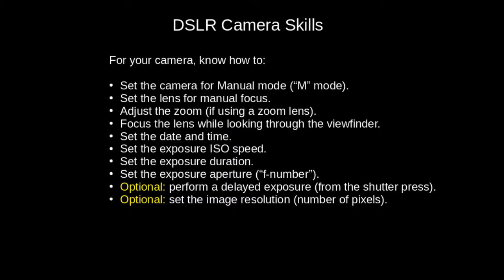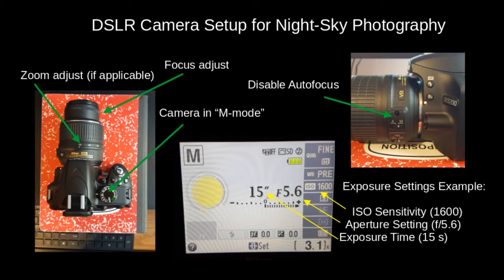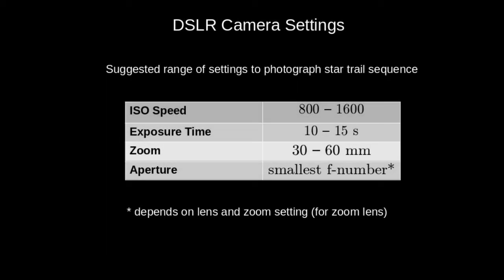For the camera that you use, here's a checklist of different things that you'll want to be able to do in setting it up. On my camera, the focus adjustment, zoom adjustment, and the camera mode settings are indicated with arrows. There's also a disabled auto focus on the lens, and the screen shows the various exposure settings as marked. To photograph star trail sequences, here are some recommended settings for exposure time, ISO sensitivity, zoom, and aperture. You'll need to take pictures over a duration of about 20 minutes, and I suggest taking at least one exposure per minute.